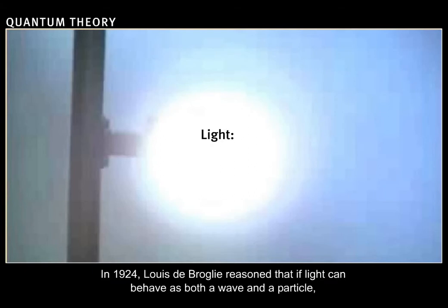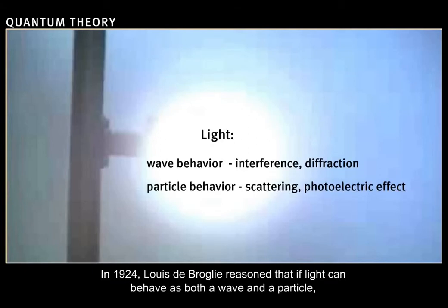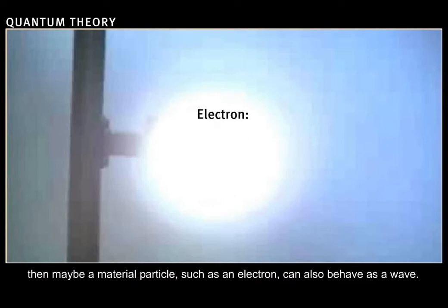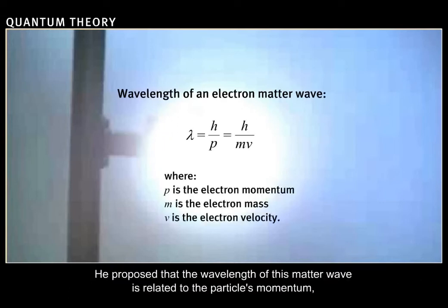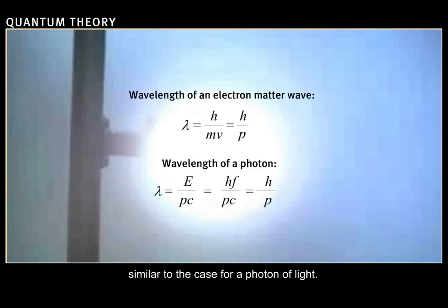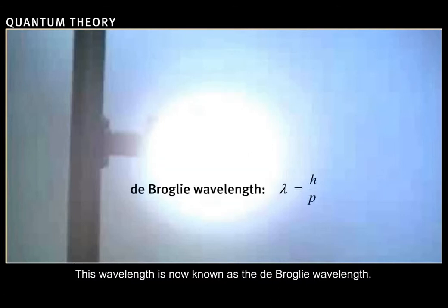In 1924, Louis de Broglie reasoned that if light can behave as both a wave and a particle, then maybe a material particle, such as an electron, can also behave as a wave. He proposed that the wavelength of this matter wave is related to the particle's momentum, similar to the case for a photon of light. This wavelength is now known as the de Broglie wavelength.